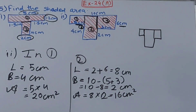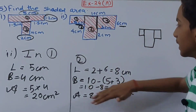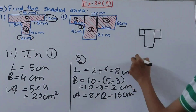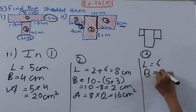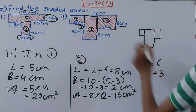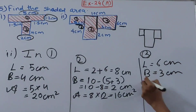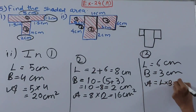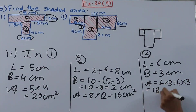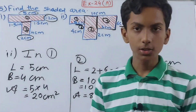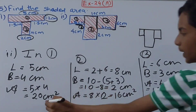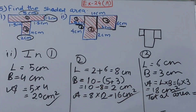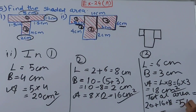For the third part, the length is 6 centimeters and the breadth is 3 centimeters. So the area = 6 × 3 = 18 square centimeters. Now adding all three parts: total area = 20 + 16 + 18 = 54 square centimeters.